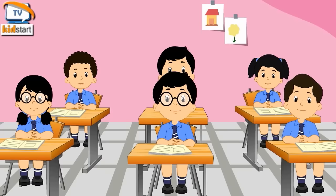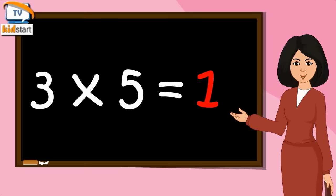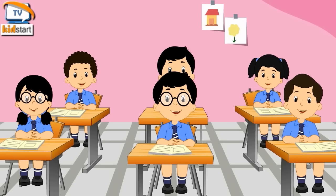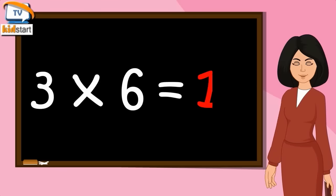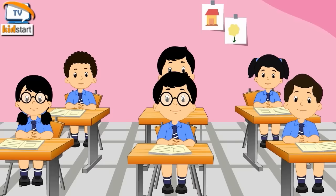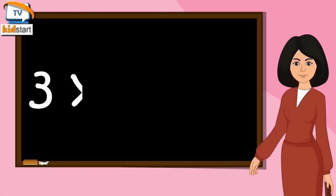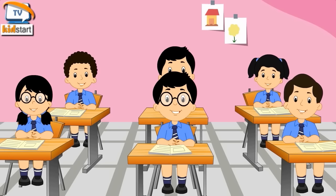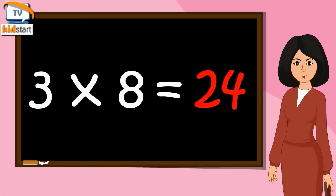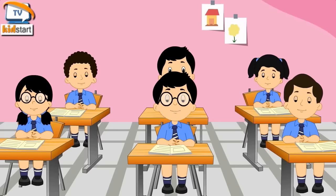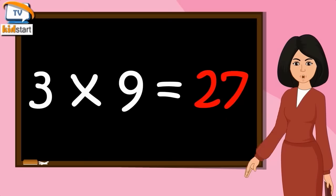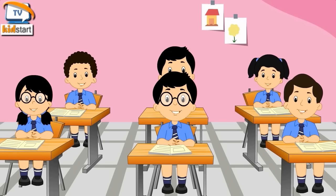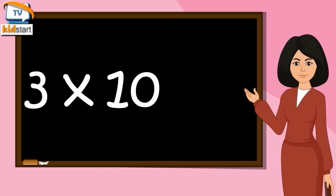Three fives are fifteen. Three sixes are eighteen. Three sevens are twenty-one. Three eights are twenty-four. Three nines are twenty-seven. Three tens are thirty.